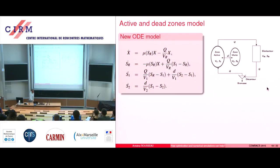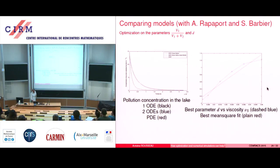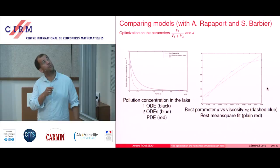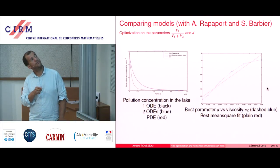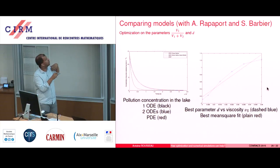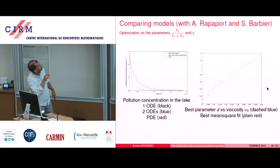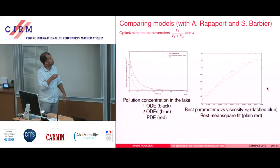So with this model, existence and uniqueness hold, and you can do again some optimal control — the same thing as before with two simple ODE models. And if you optimize the parameter V1 over V1 plus V2 and D, then you get the same curve as before. Here the black one is still the one-zone model from ten minutes ago. And here in blue and red, you have two curves — the PDE one and the two-ODE one — and the comparison is very good.